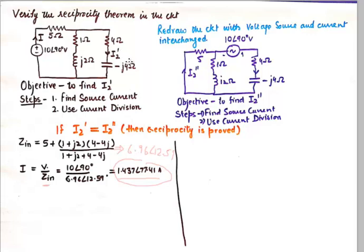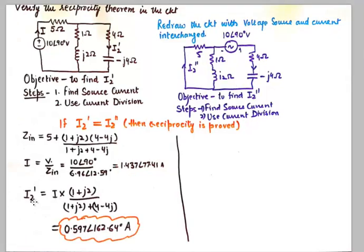Applying the current division rule, I2' is found from the total source current of 1.437∠77.41° multiplied by the opposite branch impedance (1 + 2j) divided by the sum of both parallel branch impedances. Using the calculator, I2' comes out to approximately 0.6 amperes.